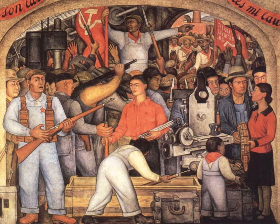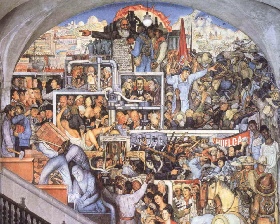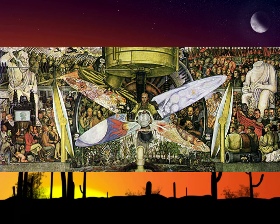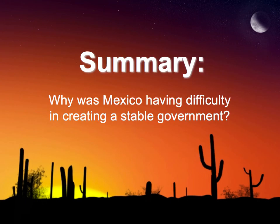There's also Frida Kahlo and images of workers — land and liberty again. There were some elements of communism in the idea of pushing foreigners out and the government taking control of some land in Mexico, as you can see from the hammer and sickle symbol. So the closing question is: why was Mexico having difficulty creating a stable government, and why couldn't they avoid slipping into a revolution like this in 1910?